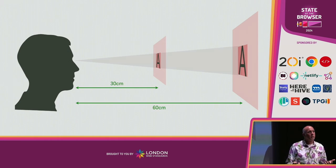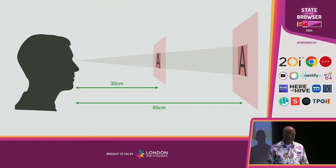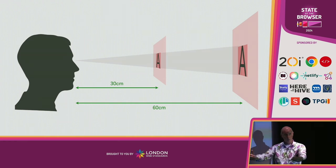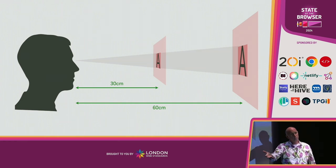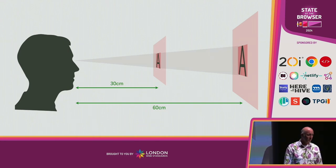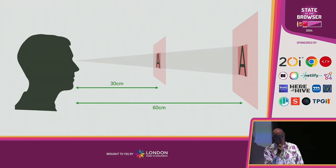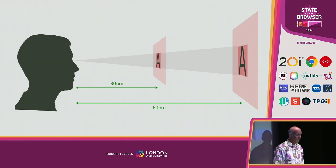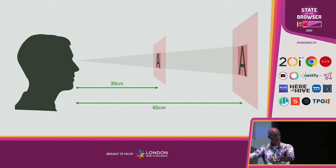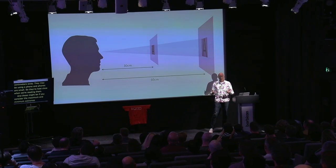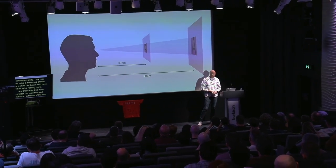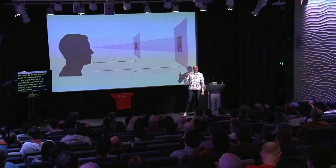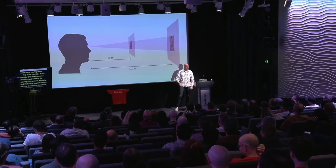So let's consider our readers. They might be sat at a desk with a large desktop screen positioned far away, maybe 60 centimetres or so — arm's length — away from their eyes. Whereas they may be using a phone, and phones are small, so they're held close when we're reading them. These might be considered the maximum and minimum extremes of the reading environment, typically. And that would explain why we want to change the size of our text depending on the size of the screen.